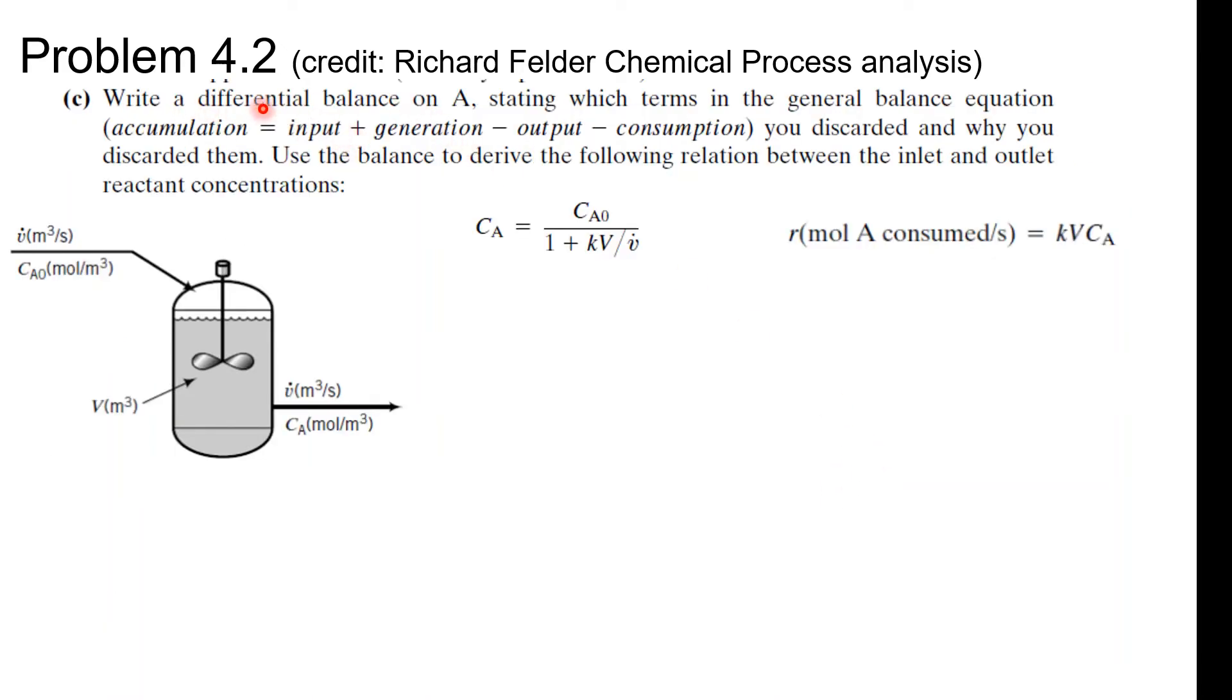Part C. This one's the doozy. Write a differential mass balance on A, starting with the terms in the general balance equation. Accumulation equals, when in doubt, accumulation equals in minus out, plus generation minus consumption. You discarded - and why you discarded them? Use the balance to derive the following relation between the inlet and reactant concentrations. I remember looking back at my book, and I wrote a little note. I was like, what the heck is this? Do we need this? The answer is yes. You almost always need everything in the book at some point or another. So I challenge you to write the equation and think about it.